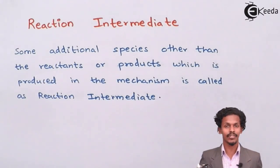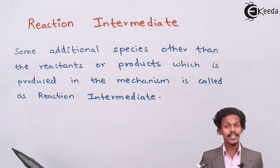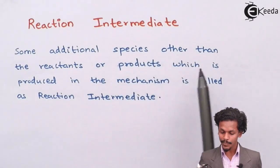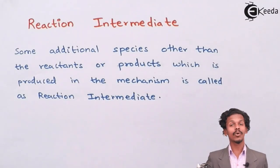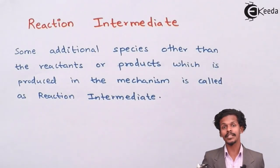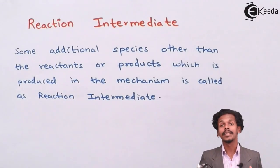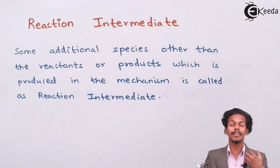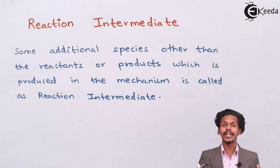The definition of reaction intermediate says: some additional species other than the reactant or product which is produced in the mechanism is called a reaction intermediate. It is only possible in a complex reaction, because complex reactions give multiple elementary steps, and the product formed in one step can be consumed or act as a reactant in another step.